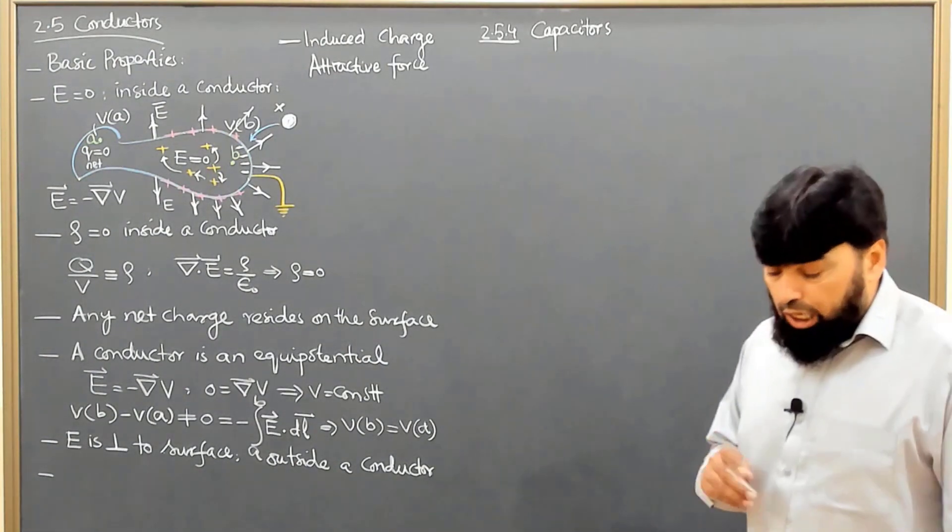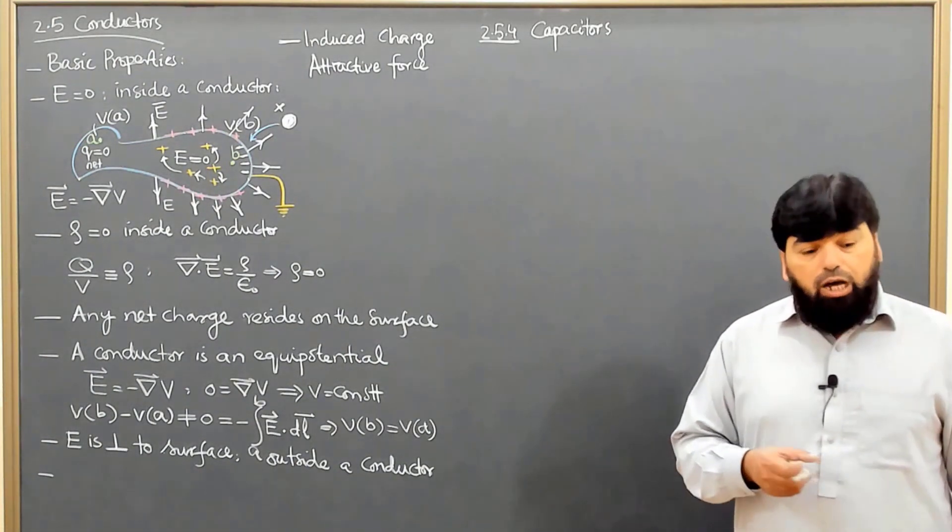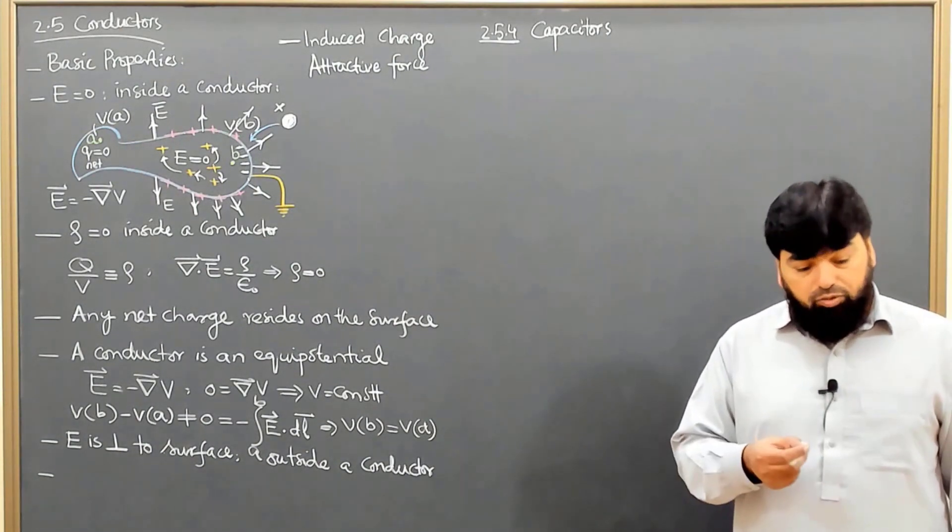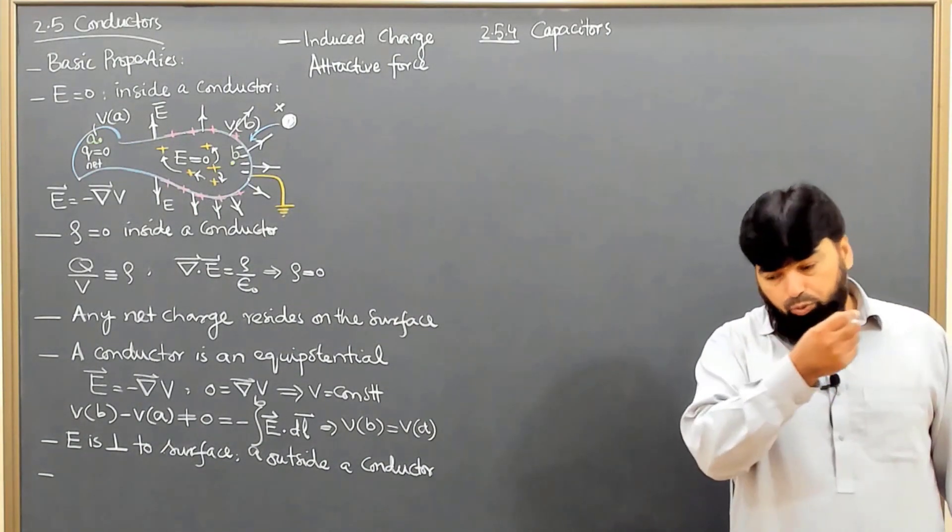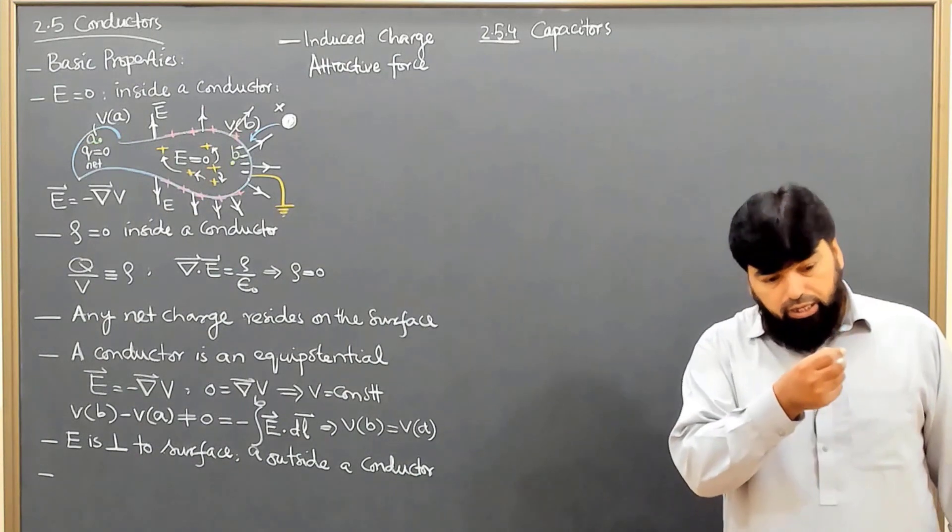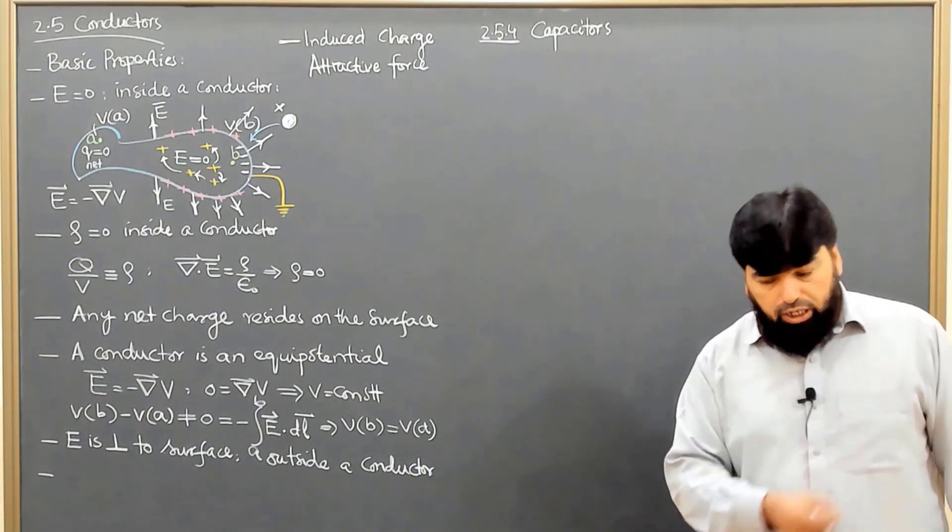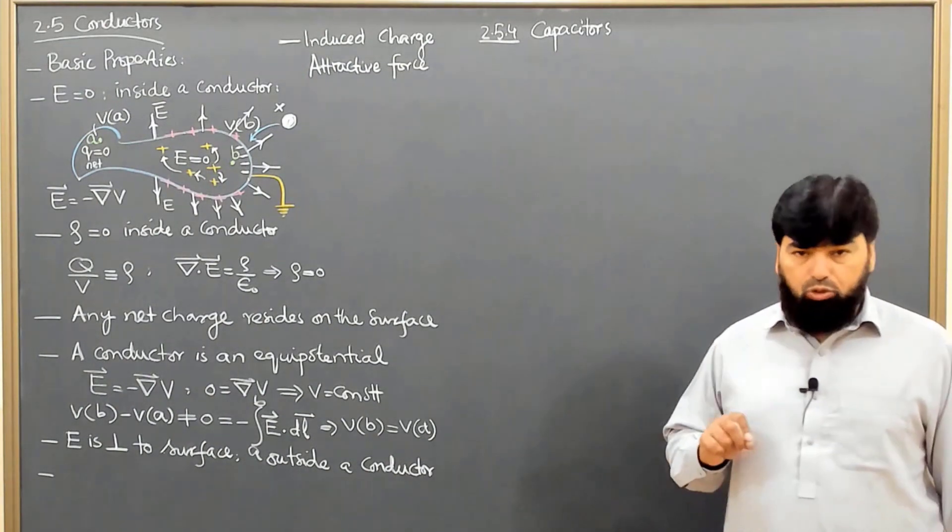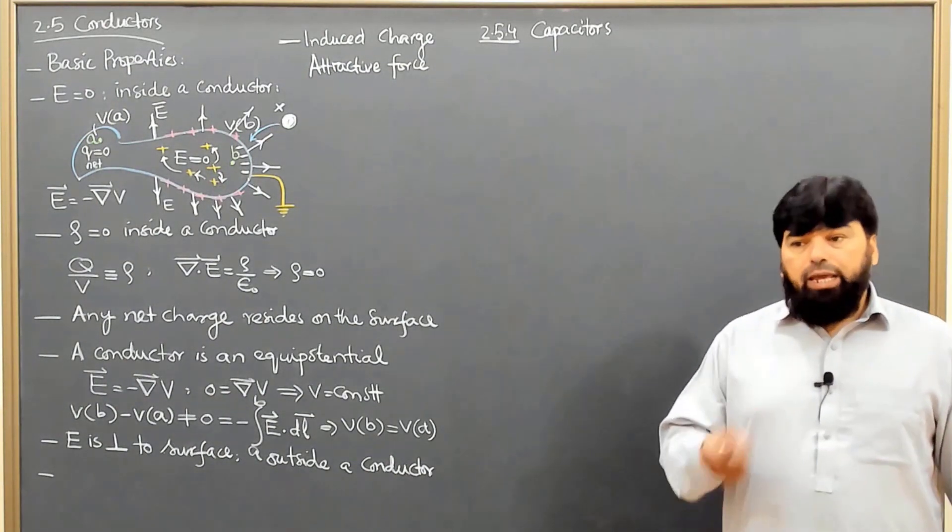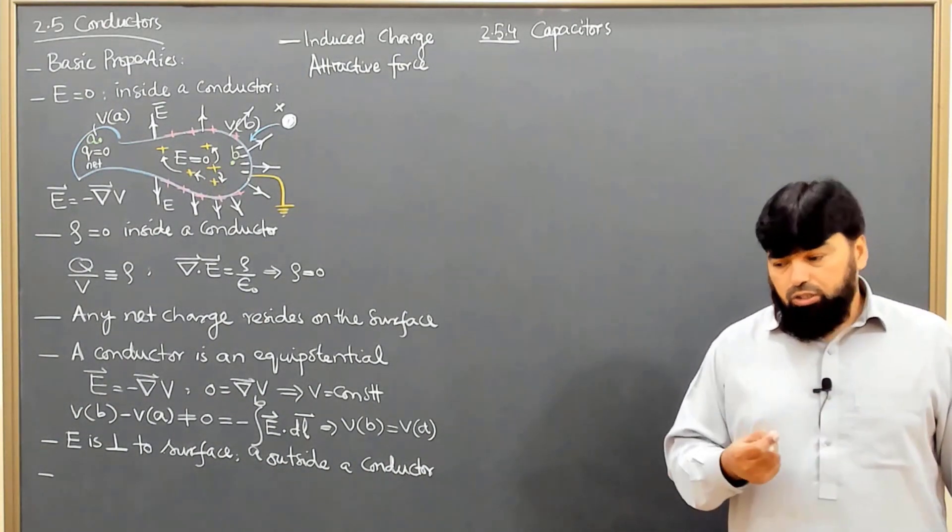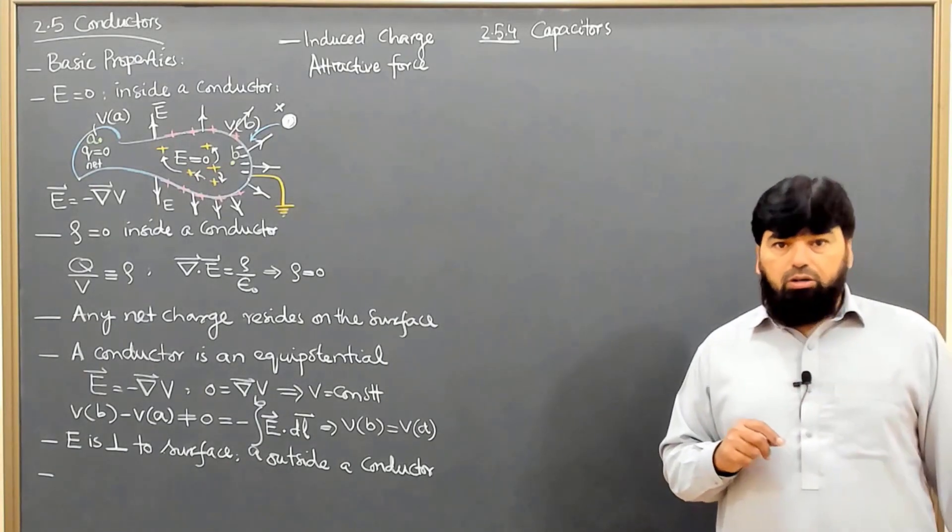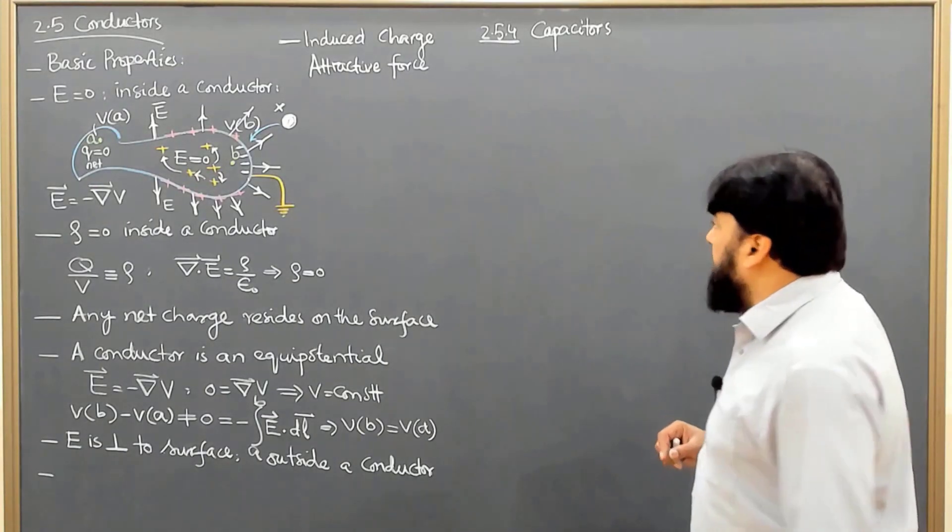When we are charging a capacitor, we are doing work against the field. From the positive plate we move the electrons toward the negative plate, so we charge the negative plate and ultimately positive charge appears on the positive plate.